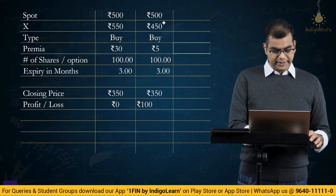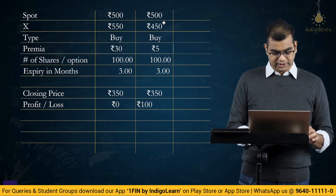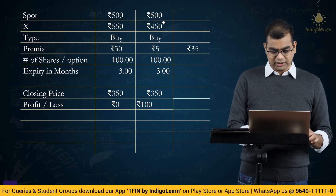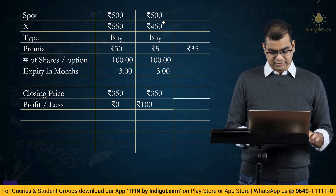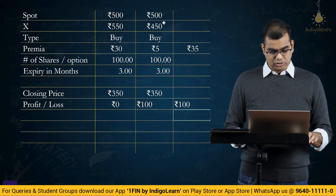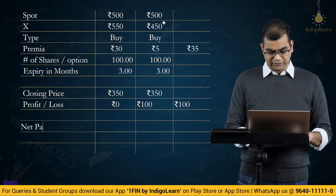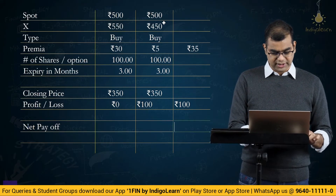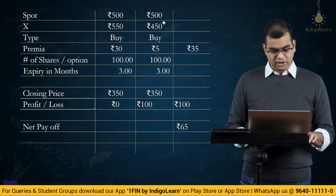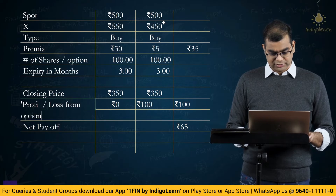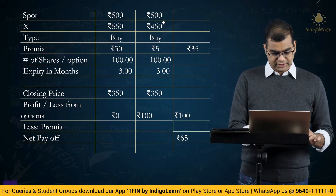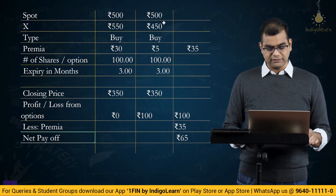The total premium paid is 30 plus 5, which equals Rs. 35. The total profit from options is 0 plus 100, which is Rs. 100. So the net payoff is 100 minus 35, which equals Rs. 65. This is the profit or loss from options less premium of Rs. 35, giving a net payoff of Rs. 65.